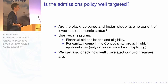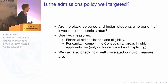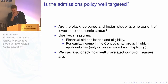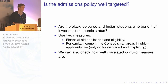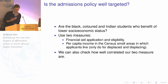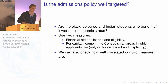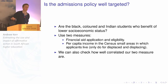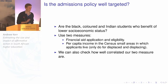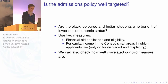The next question is whether the admissions policy is well-targeted. Are black, colored, and Indian students who benefit from lower points requirements of lower socioeconomic status? The first measure we use is financial aid application and eligibility. Not everyone applies for financial aid, so this won't be a perfect measure. The second measure is per capita income in the census small areas where applicants live. We compute this census income measure for displaced and displacing students only, and check how well correlated these two measures are.